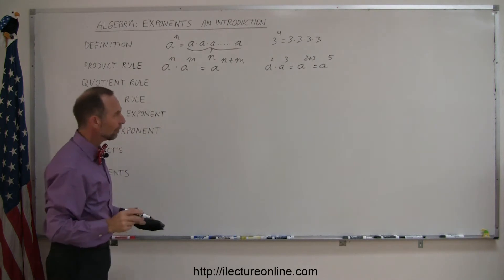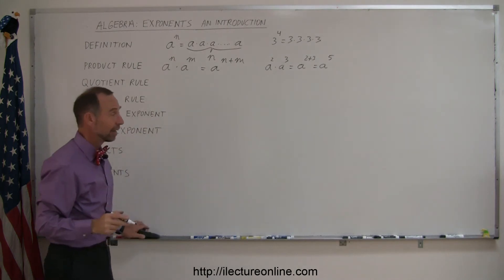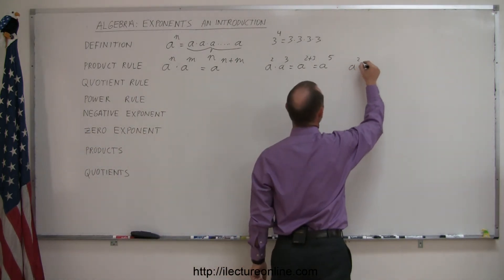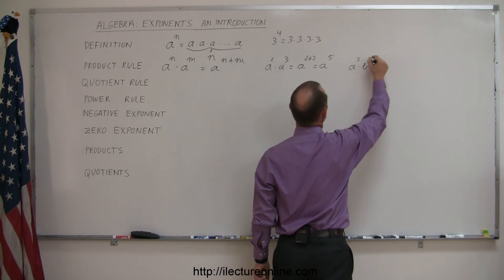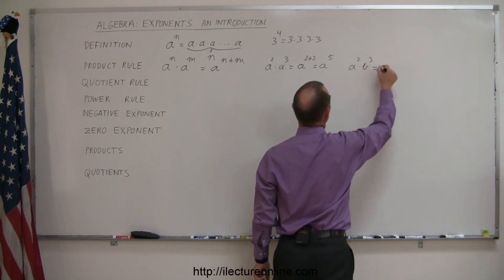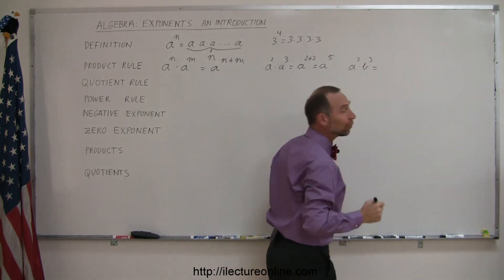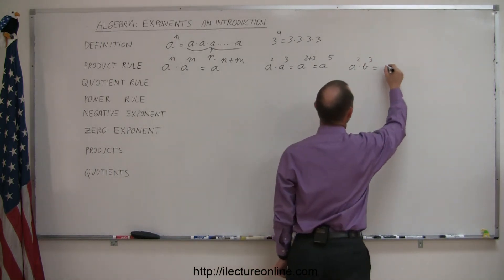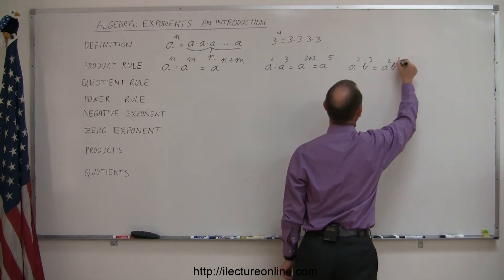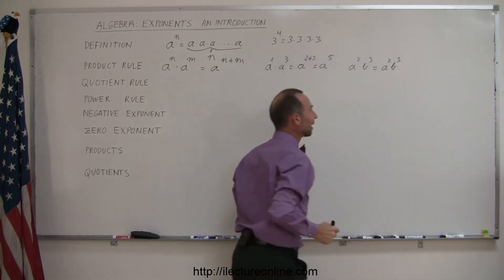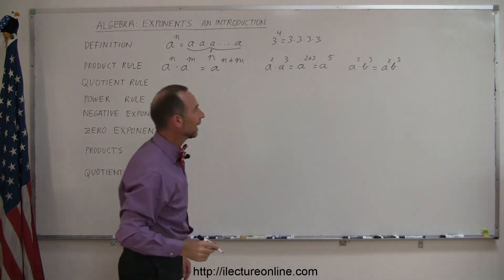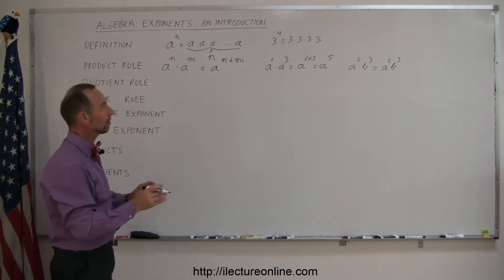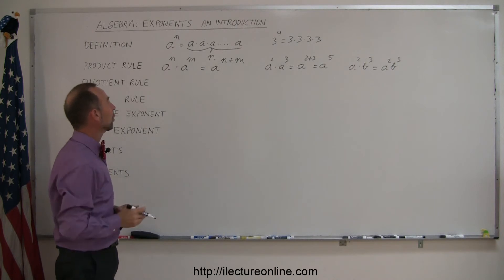Of course, if the bases are not the same — for example, if we have a to the second power times b to the third power — we can't do anything about that. That's simply still a to the second power times b to the third power, because we can't simplify that any further. So only when the bases are the same can we add exponents.